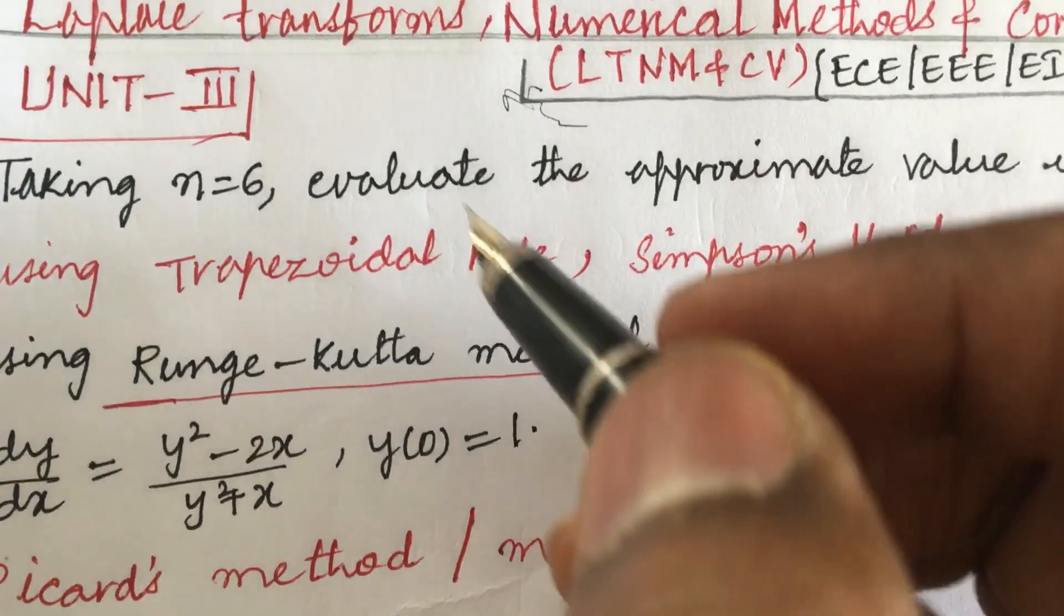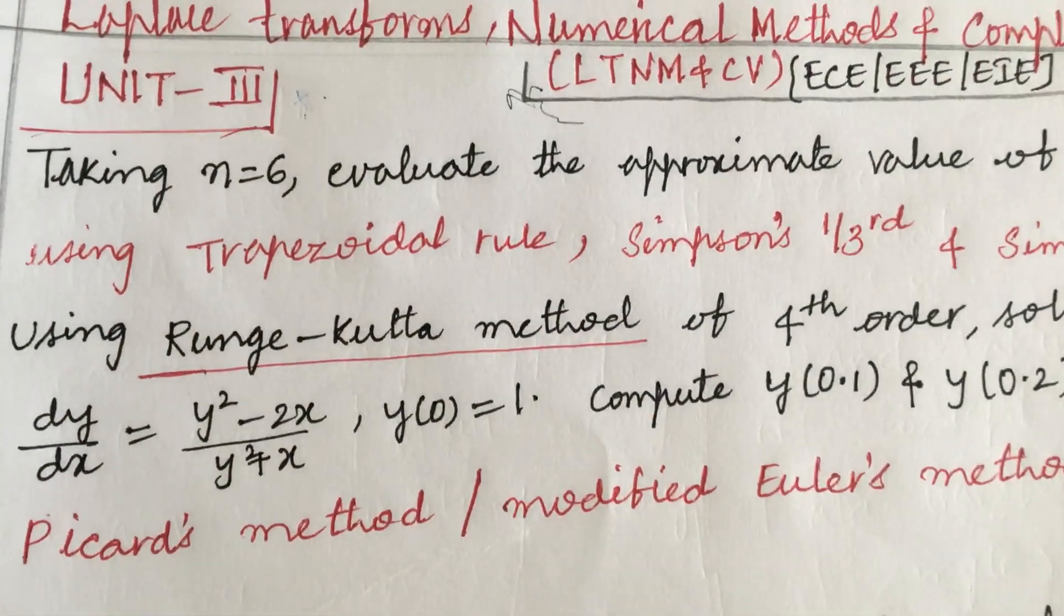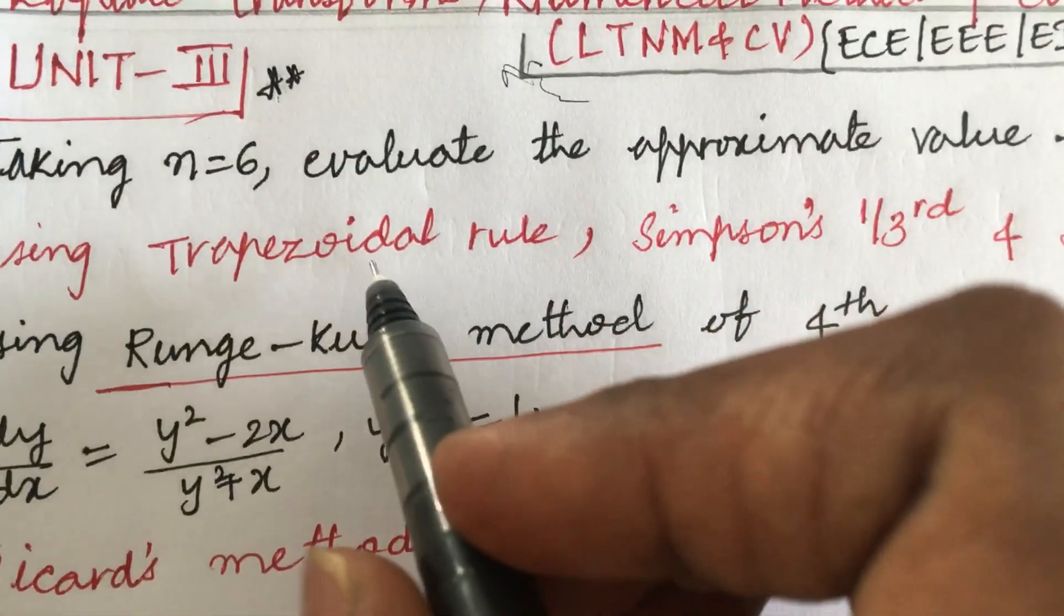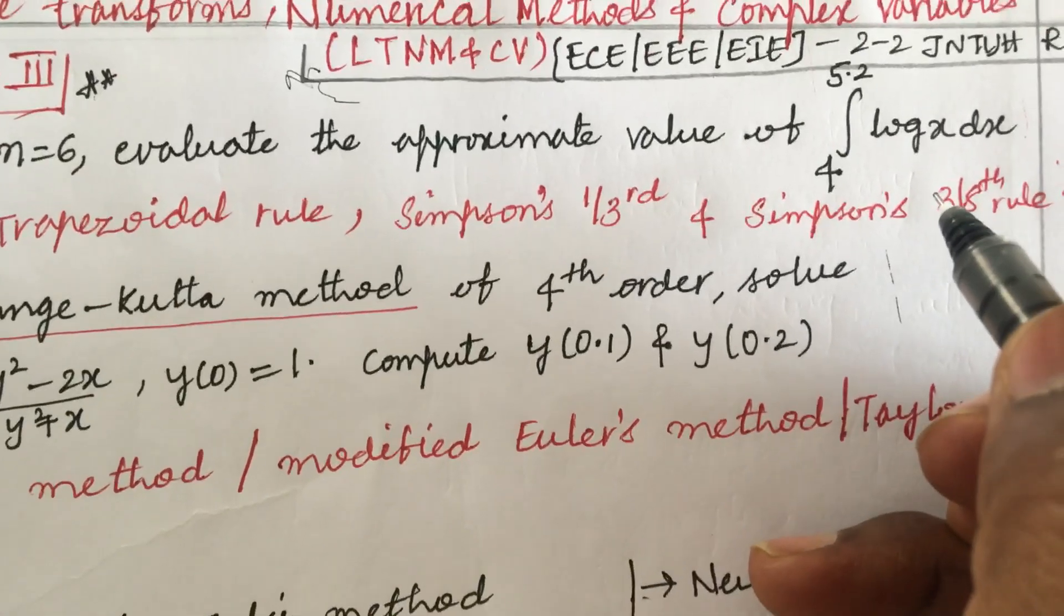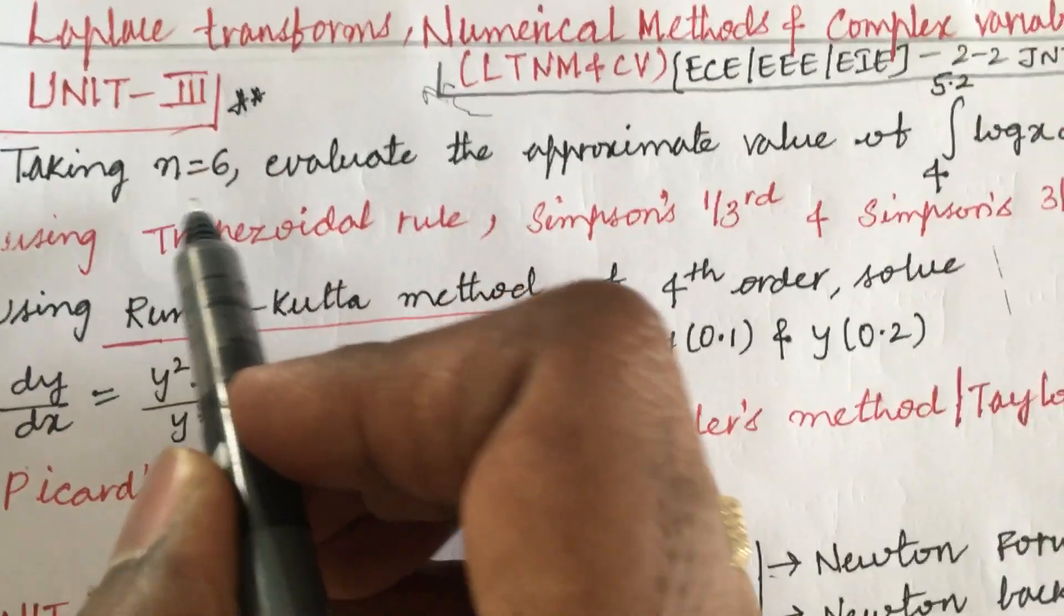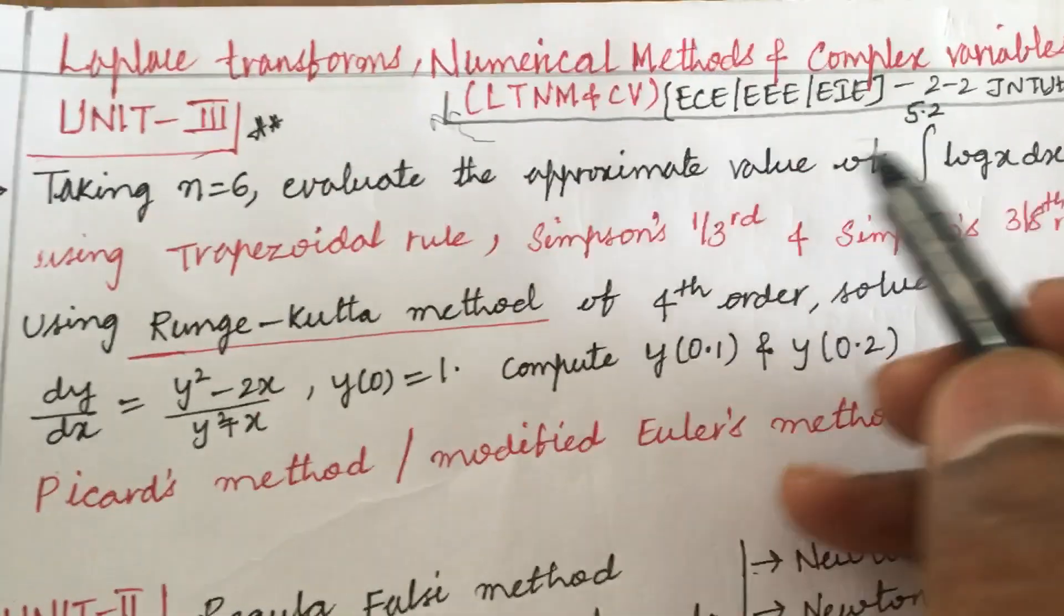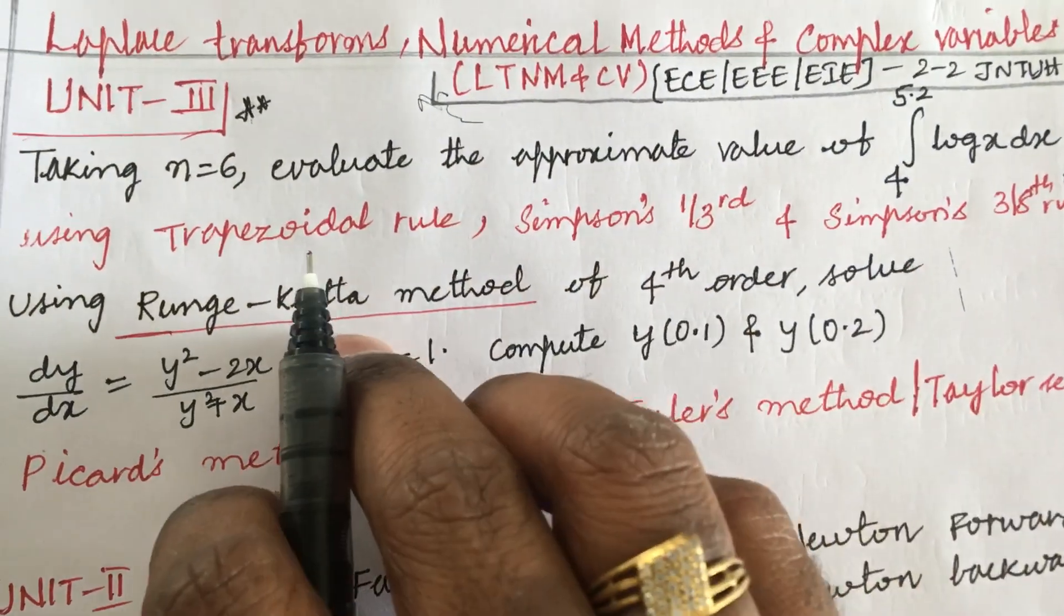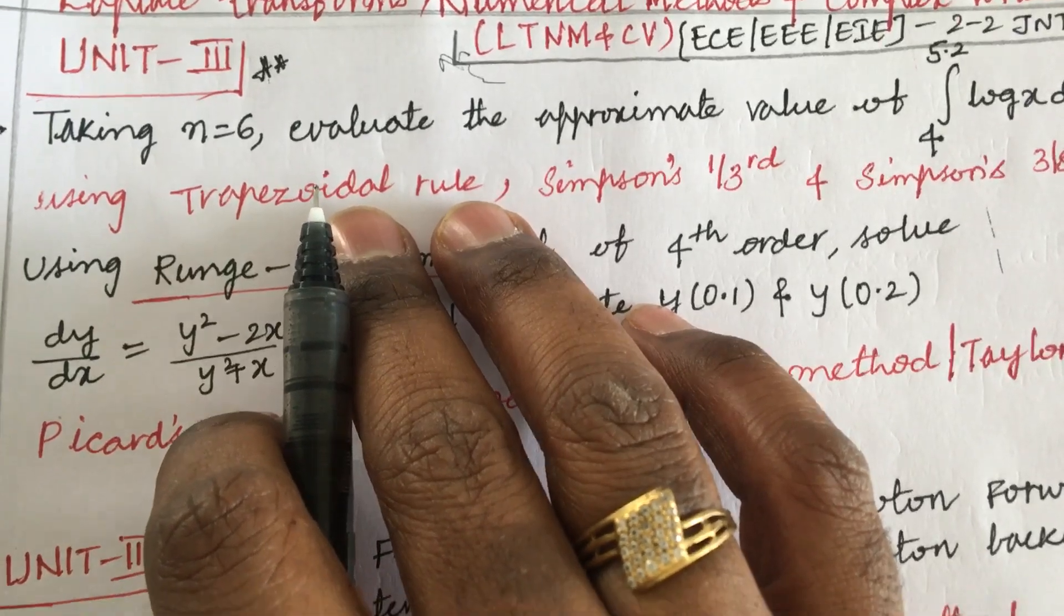The first and foremost question I have considered from unit 3. Students who are not good at the things need to work out unit 3 first. Questions like the trapezoidal rule, Simpson one-third as well as Simpson 3 by 8th rule will be asked this time for sure. Like the question example is taking n equals to 6, evaluate the approximate value of such integration by using these three methods. This is set to be the damn sure question.